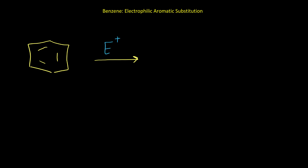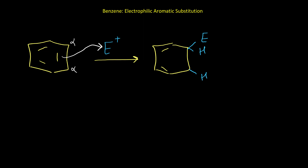I show the electrophile as E+. In the first step, a double bond from benzene attacks the electrophile. The electrophile can attach to either carbon; I'll choose one. If we put the electrophile on this carbon, there is also a hydrogen here. The other carbon then doesn't have enough electrons — it has six electrons — so it becomes positive. One carbon makes a bond with the electrophile, and the other carbon becomes positive, so the system is no longer aromatic.